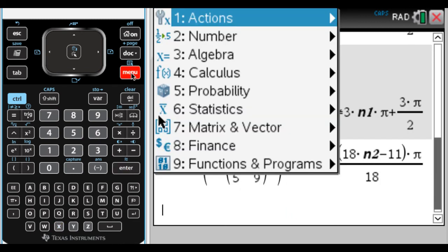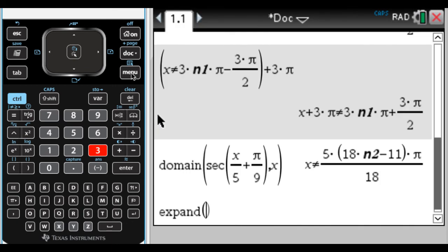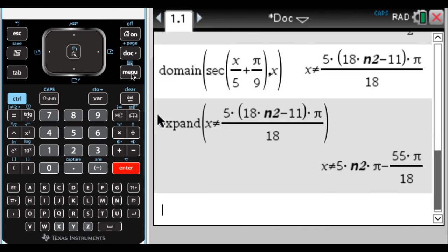I'm going to expand it. So menu 3, 3, and paste down. So I get that. Again, it's giving me the first negative. I don't really like that.